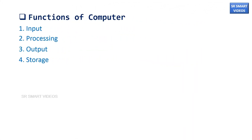This topic explains the basic functions of a computer system. Based on the fundamental working of a computer system, a computer mainly has four basic functions. They are input, processing, output, and storage. Learn the basic functions of a computer system through diagrams with details.